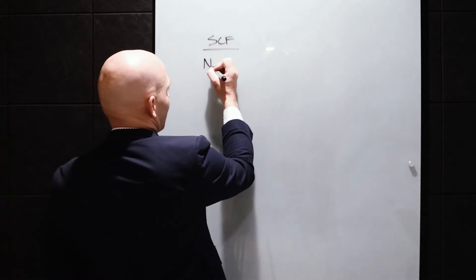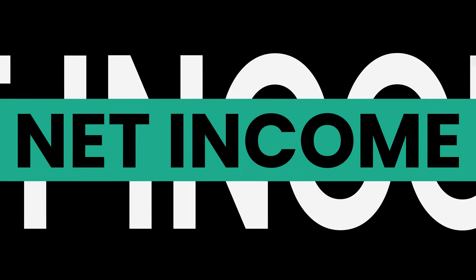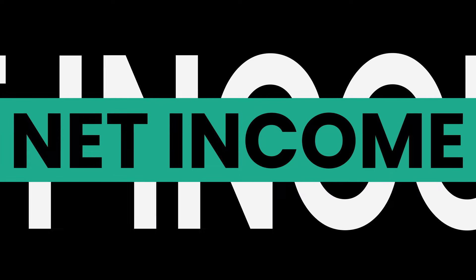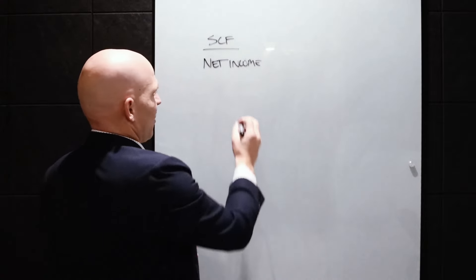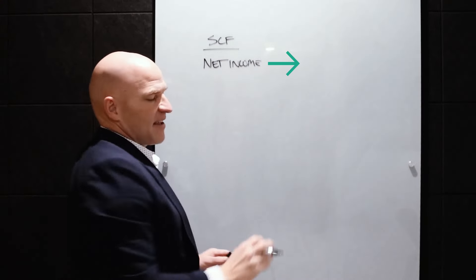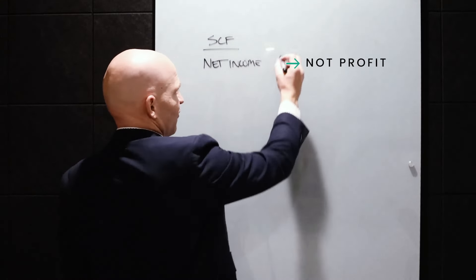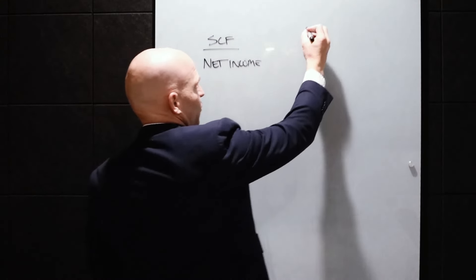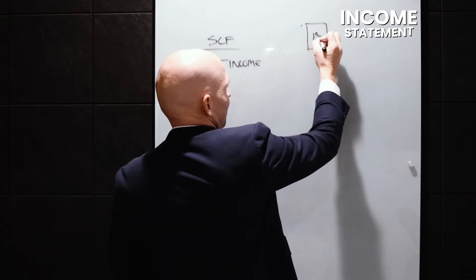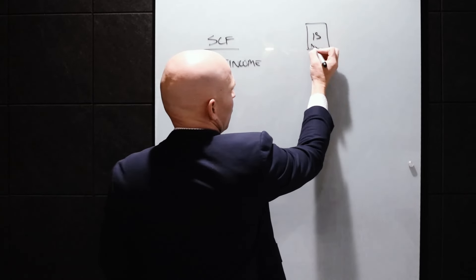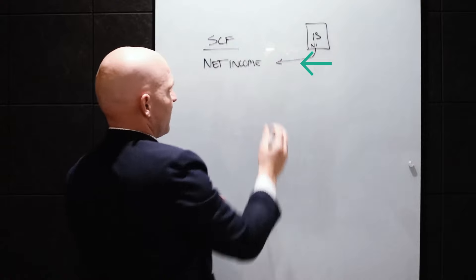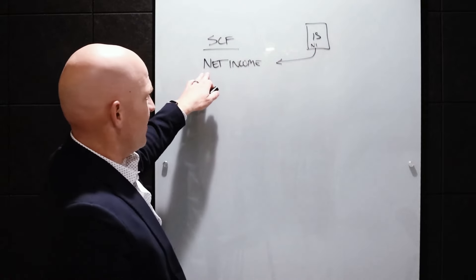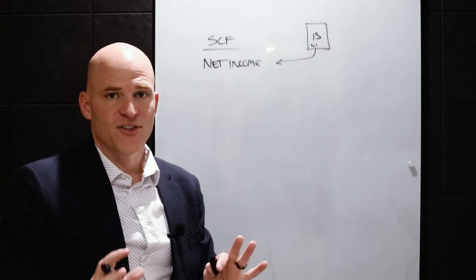So first we have net income. That's the beginning line item on the statement of cash flows. Now, net income is not cash — instead, this is just flowing through from the income statement. We end up with net income on the income statement, and this flows over to the statement of cash flows and makes up the first line item.